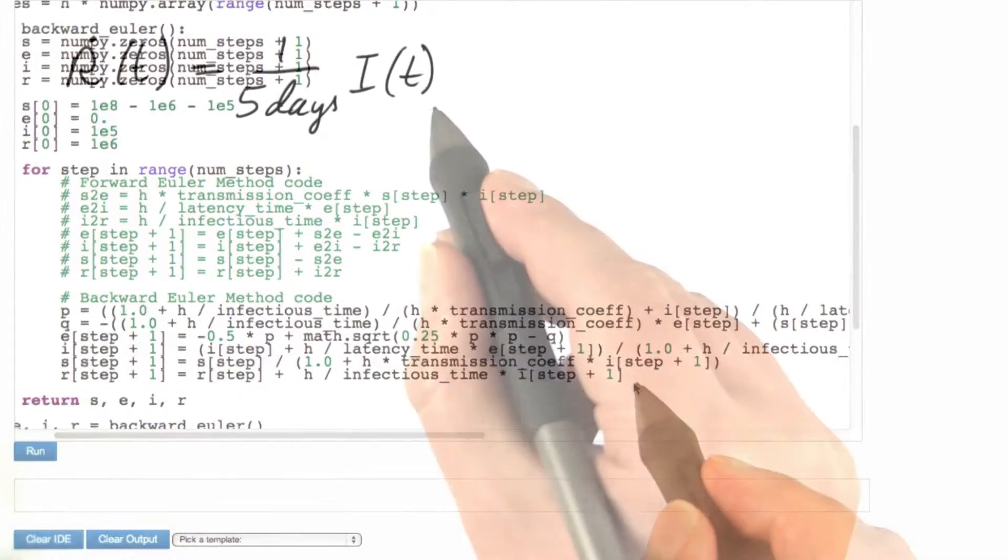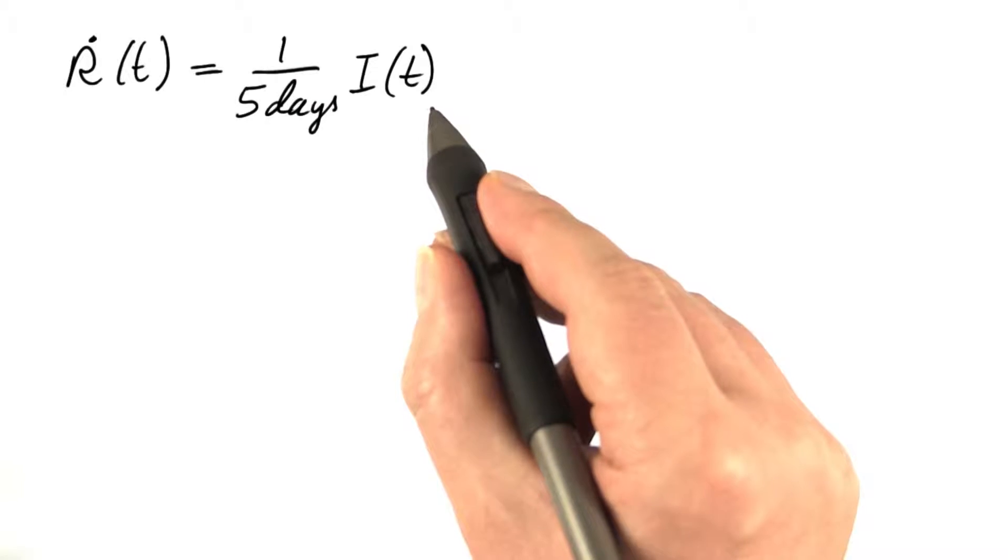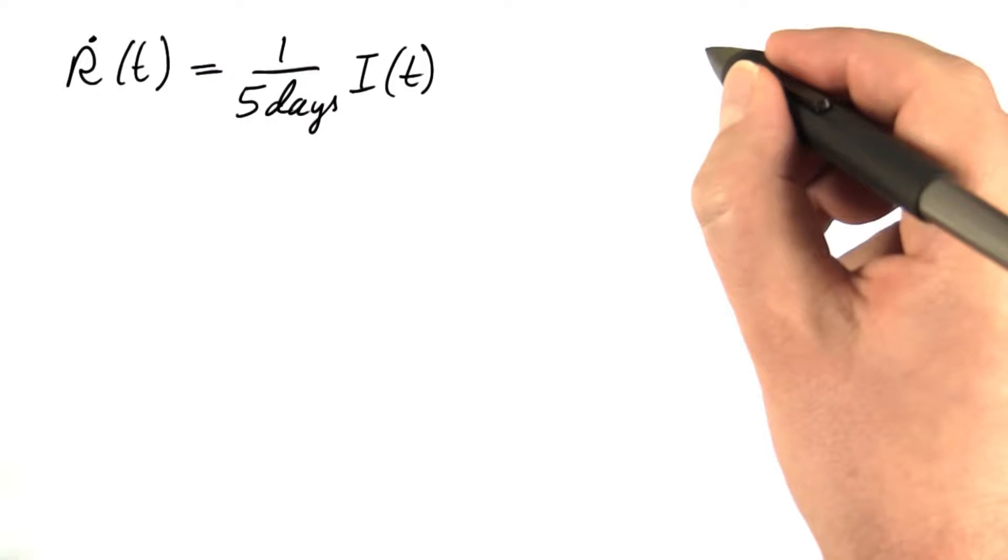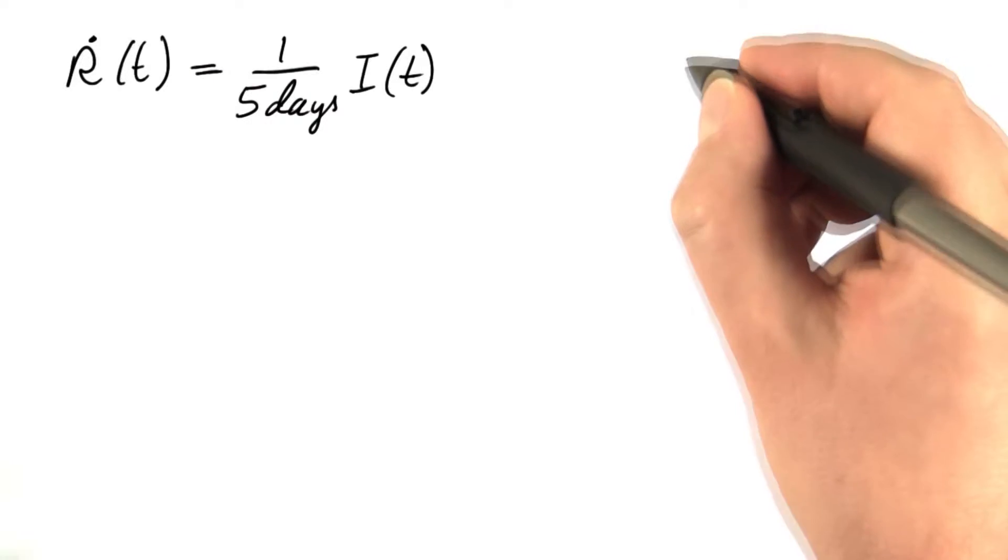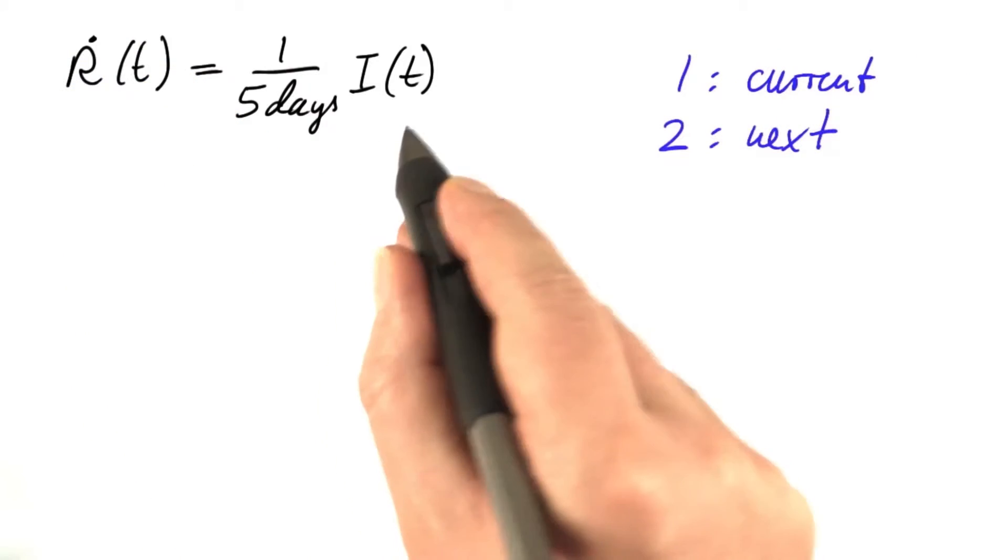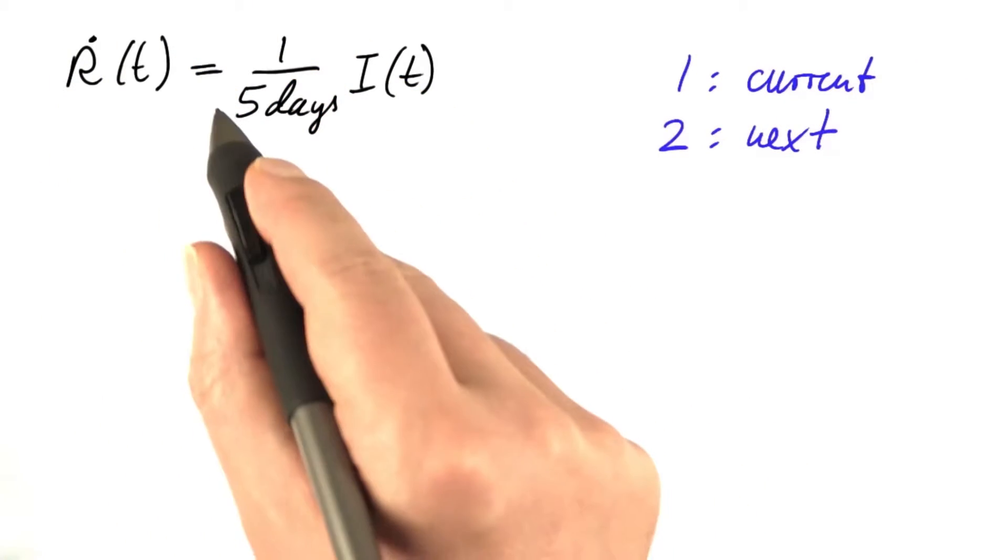You really do need pencil and paper to derive these equations. That's what we are going to do now. The equation for r, the number of recovered persons, is the easiest one. We'll start with that. And to save space, let me write underscore one for the current quantities and subscript two for the quantities of the next step.